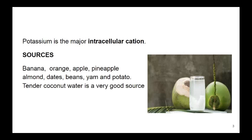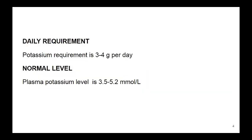Potassium is the major intracellular cation. The sources are banana, orange, apple, pineapple, almond, dates, beans, yam, and potato. A very good source of potassium is tender coconut water. The daily requirement is 3 to 4 grams per day, and the normal level is 3.5 to 5.2 millimoles per liter.